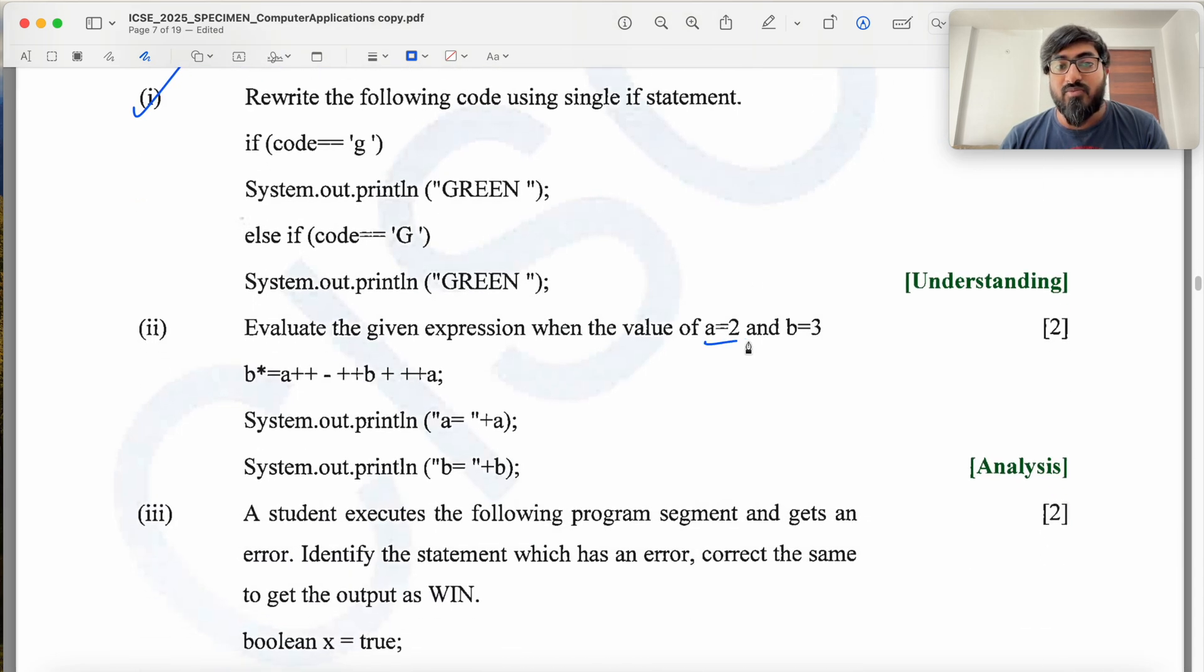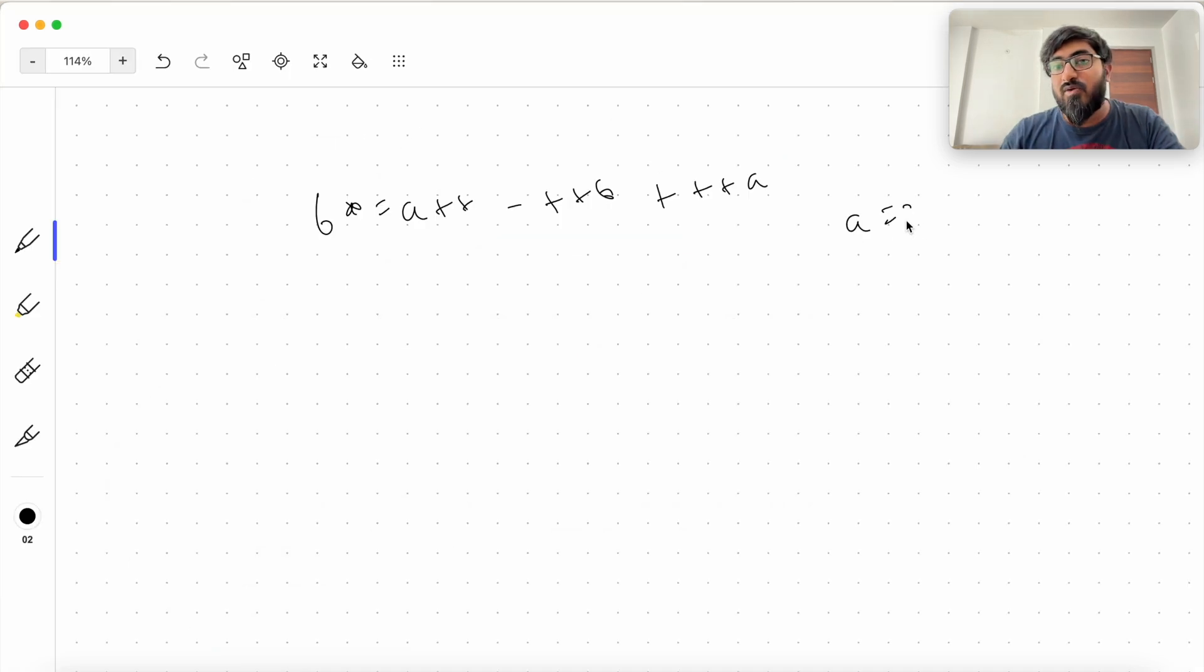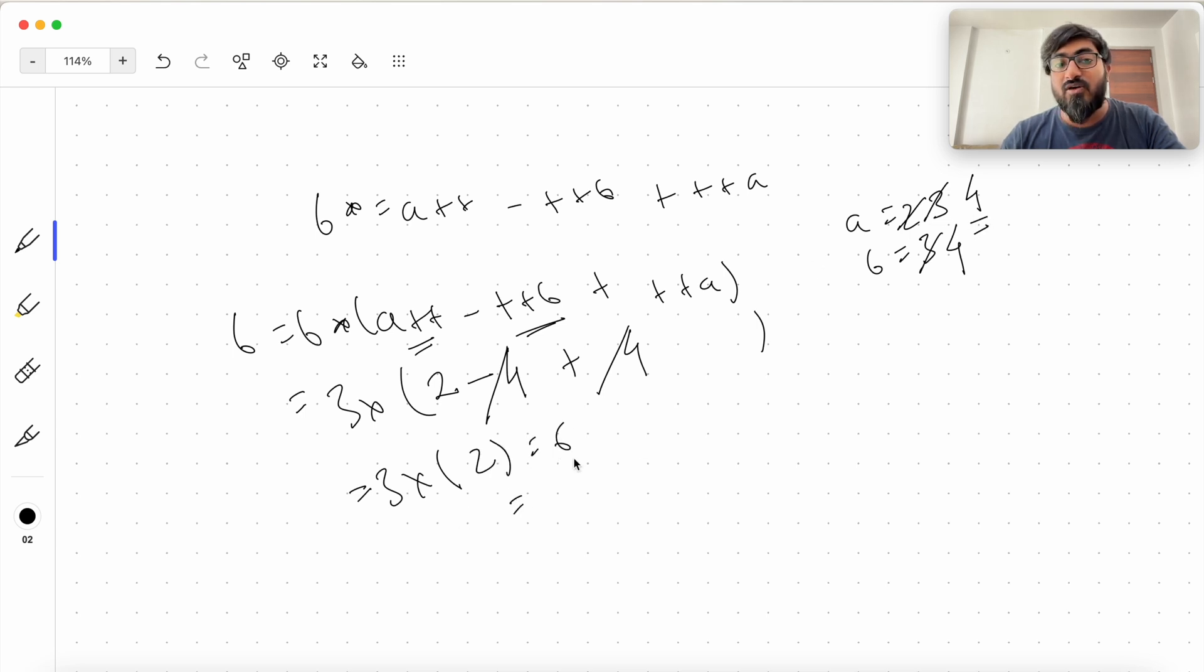Next part is A is 2, B is 3. So A equal to 2 and B equal to 3, and you have to solve this. This basically expands to B equal to B into this entire thing: A plus plus minus plus plus B plus plus plus A. So the value of B is 3 into, and then we solve this equation. This is post increment - use the value of A and then increment. The value of A is 2, we use it, then increment it by 1, it comes 3. Minus plus plus B - pre increment, you increment the value of B first then use it. You increment it to 4 and then use it. Plus plus plus A - increment the value of A and then use it, incrementing it to 4. So 3 into minus 4 plus 4 cancel, 2 equal to 6. A comes out to be 4, B comes out to be 6.